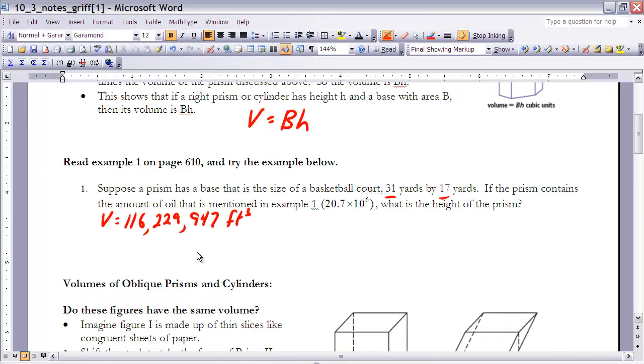Before looking at example one you might want to re-look at example one in your book. This one is similar to it and we're going to use some of the information from that problem as we go forward. It says suppose a prism has a base that is the size of a basketball court 31 yards by 17 yards. If the prism contains the amount of oil that is mentioned in example one 20.7 times 10 to the sixth and that's barrels if you go back and look at example number one there.